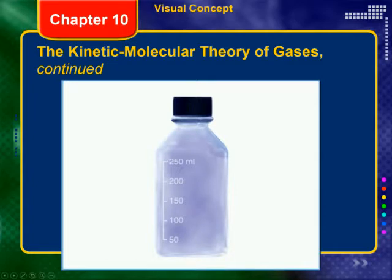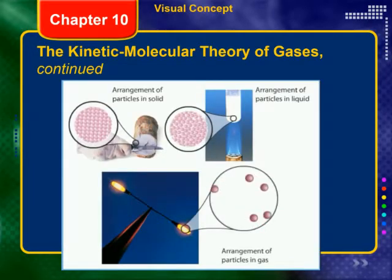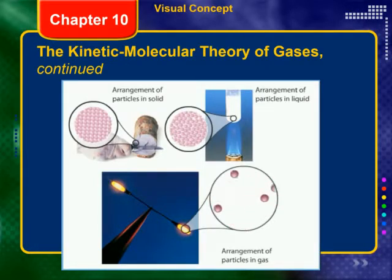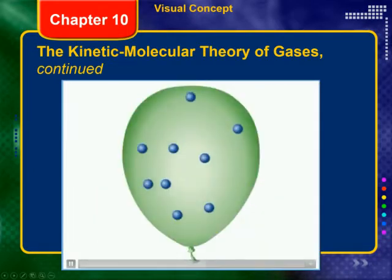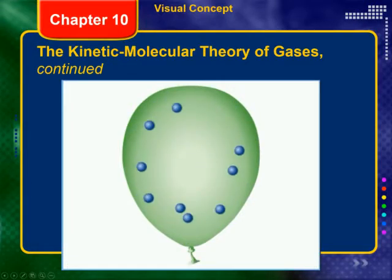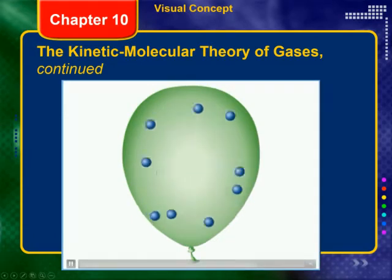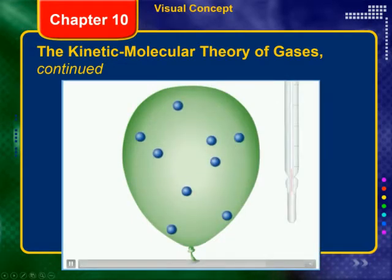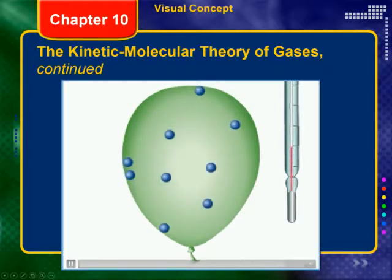The kinetic molecular theory describes the behavior of gas molecules and the physical properties of gases. It views gases as being made up of large numbers of fast-moving particles that are far apart from each other, so most of the volume occupied by a gas is empty space. Gas particles are in continuous rapid random motion, and forces of attraction or repulsion between them are essentially non-existent. Kinetic molecular theory relates the kinetic energy of gas particles to the temperature of the gas.